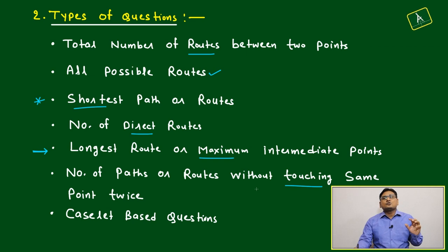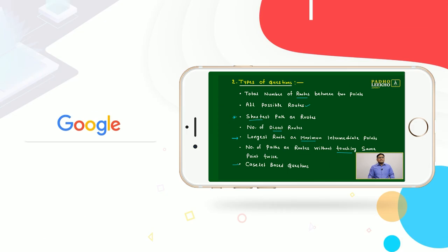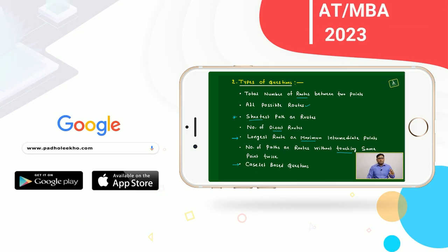Number of paths or routes without touching same points twice. That also, this type of question also will repeat in good number of times. And generally questions related to routes and network, it will be based on the caselet type, means combination of questions. Three, four, or five questions will be combined in one caselet and question will be framed.